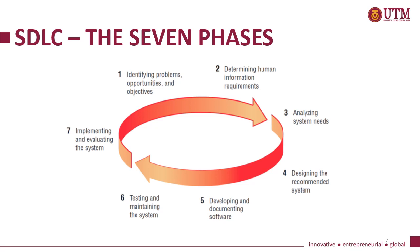There are seven phases in System Development Life Cycle. First phase is identifying problems, opportunities and objectives. Second phase, determining human information requirements. Third phase, analyzing system needs. Fourth phase, designing the recommended system. Fifth phase, developing and documenting software. Phase six, testing and maintaining the system. And phase seven, implementing and evaluating the system.